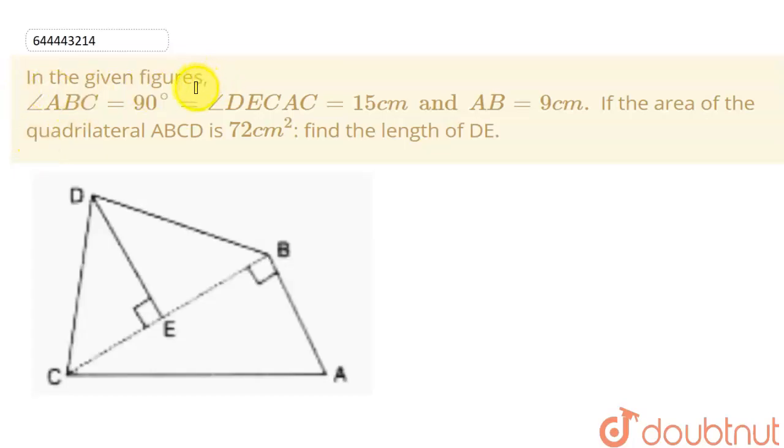So students, in this question we have given the angle ABC as 90 degrees. This angle ABC is 90 degrees and the angle DEC is also 90 degrees. And this side AC is 15 centimeters and the side AB is 9 centimeters. And area of this quadrilateral ABCD is 72 centimeter square. I am going to find the length of DE.